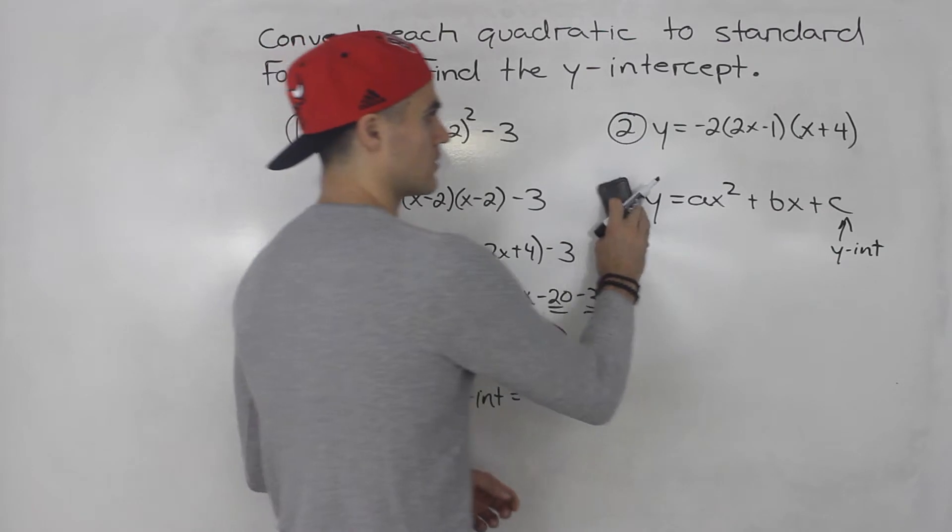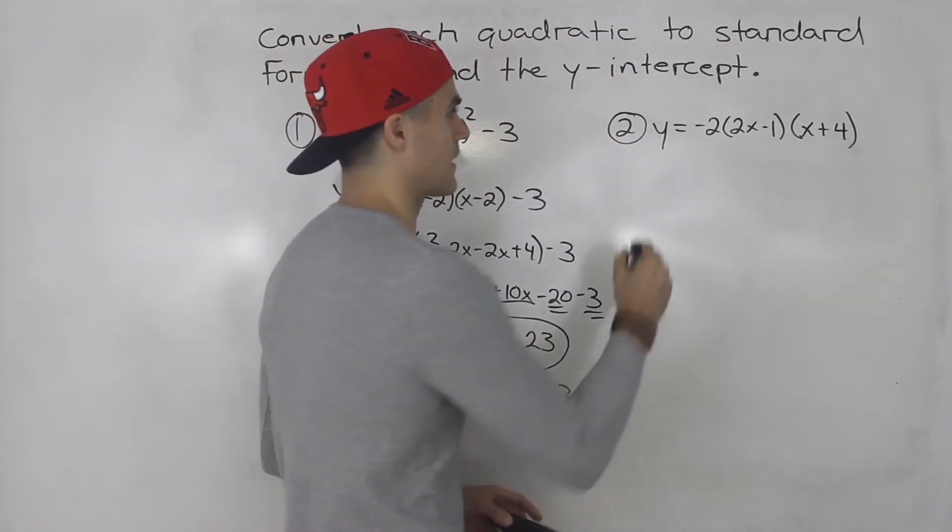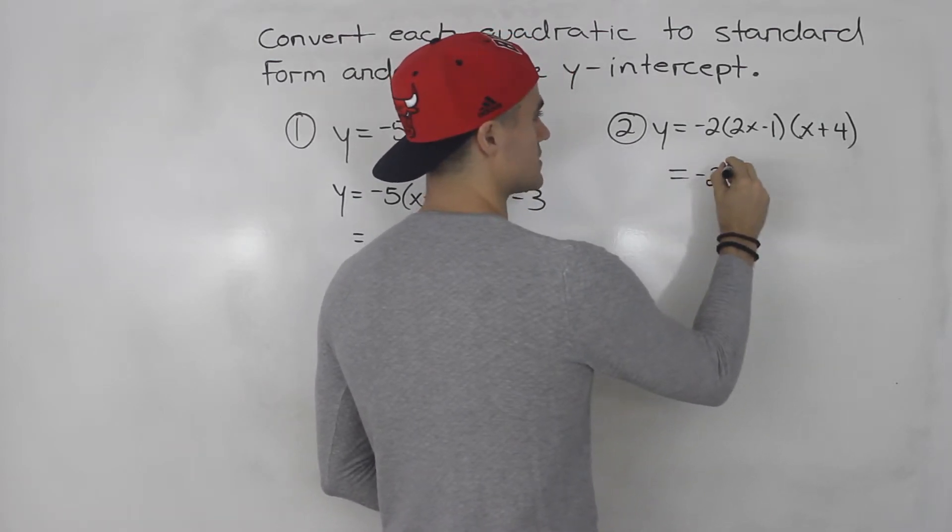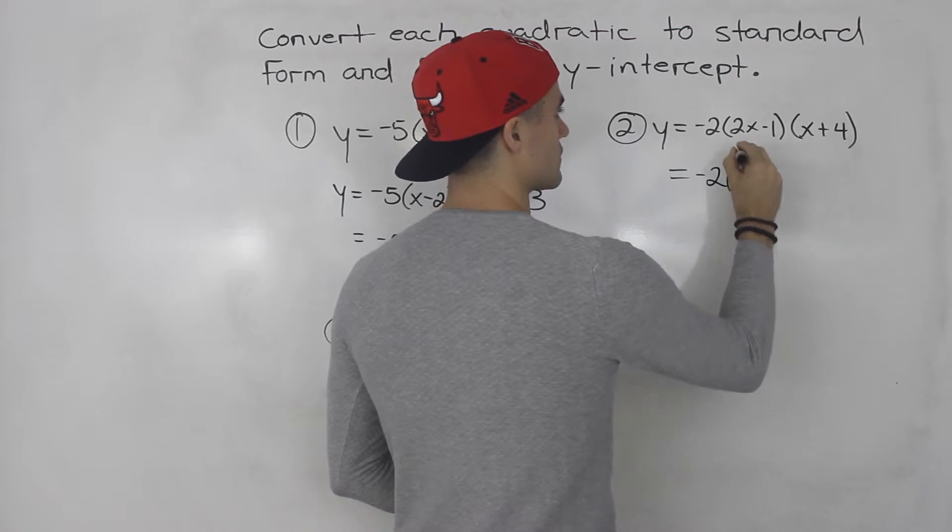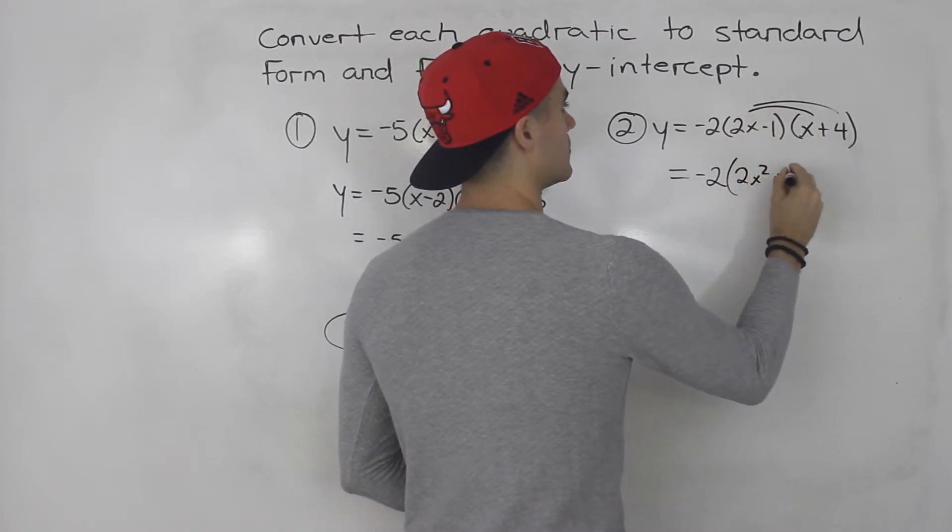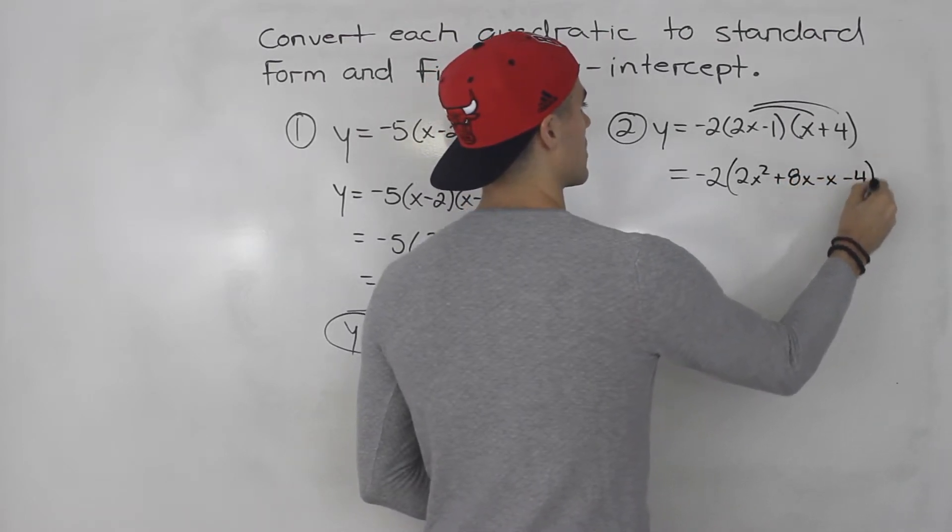Okay, same thing for number 2. This is in factored form so just expand everything. And in my opinion expanding factored form is easier. So here you would just foil this out. So 2x squared plus 8x minus x minus 4 like that.